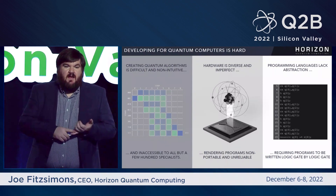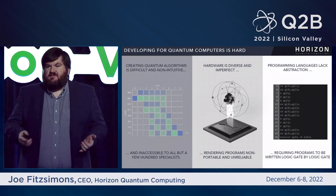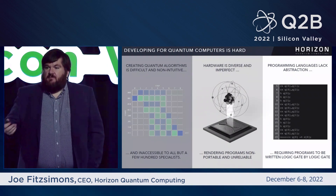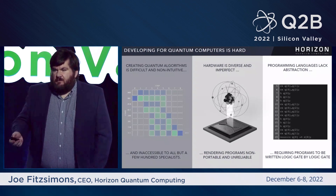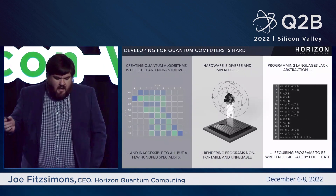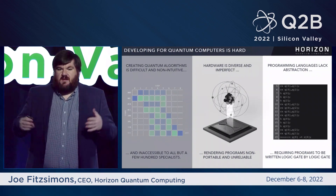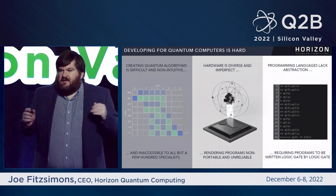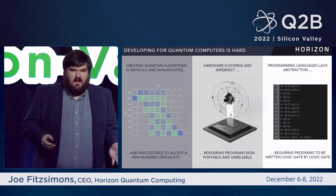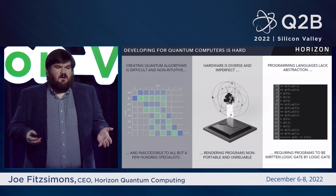The first is that we need the hardware, and I think everyone is aware of that. There are many efforts underway to try to build hardware capable of outperforming classical computers for meaningful problems. But it's a hard task. But there's another barrier: even if we had a large quantum computer tomorrow — say a million qubits, clean and error-free — we would still not really be able to use it for very much. One of the reasons is that it's simply difficult to develop for quantum computers.